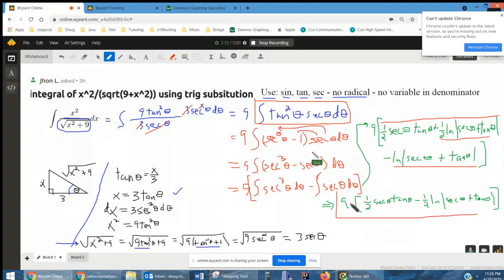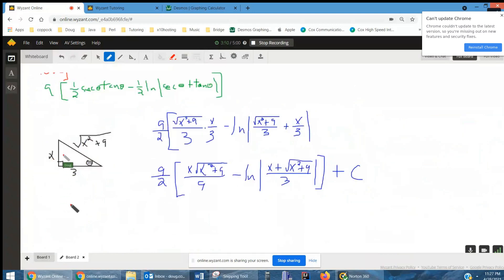So I have combined the similar terms. I've got the 9 out front. Now what do I do with that? Well, that's where I've got to come back to this lower right triangle. And replace secant theta tangent theta with what they are in terms of x. So I'll go back to the board.